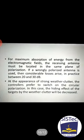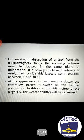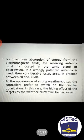For maximum absorption of energy from the electromagnetic field, the receiving antenna must be located in the same plane of polarization. If a wrongly polarized antenna is used, then considerable losses arise. At the appearance of strong weather clutter, the controller prefers to switch on the circular polarization. In this case, the hiding effect of the targets by the weather clutter will be decreased.